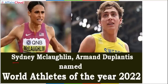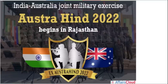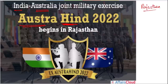Sydney McLaughlin and Armand Duplantis have been named World Athletes of the Year. Austra Hind is the name of the joint military exercise held between India and Australia - 'Austra' from Australia and 'Hind' meaning India. Austra Hind 2022 was held in Rajasthan.